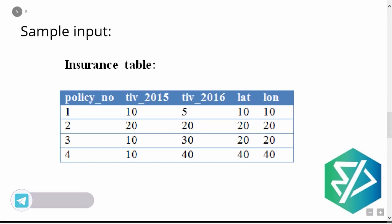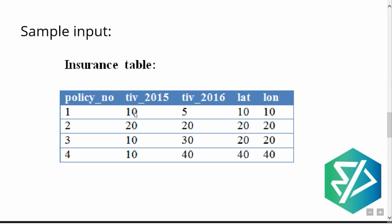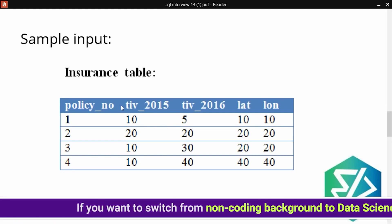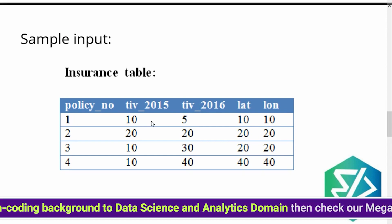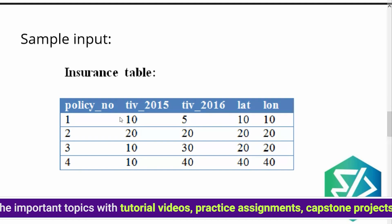How did the output of 45 come up? We had to report the total investment in 2016 for policyholders who have the same total investment in 2015 but are located in a different city. The same TIV 2015 values are 10, 10, and 10 — so policy numbers 1, 3, and 4 all have TIV 2015 = 10. We will consider only policy numbers 1 and 4.